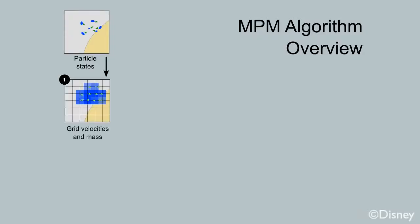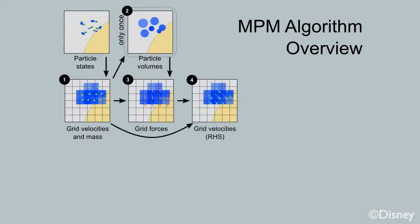We first rasterize mass and velocity to the grid. As an aside, on the first step, we compute initial particle volumes. These are used when we compute grid-based forces on all other steps. We use these forces to explicitly update grid velocities.